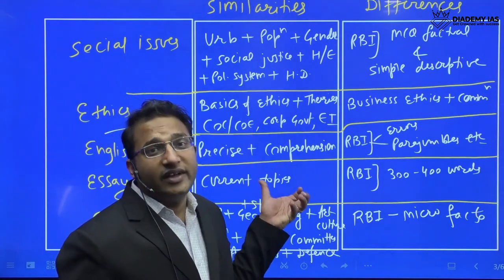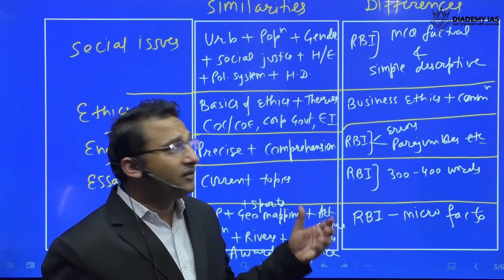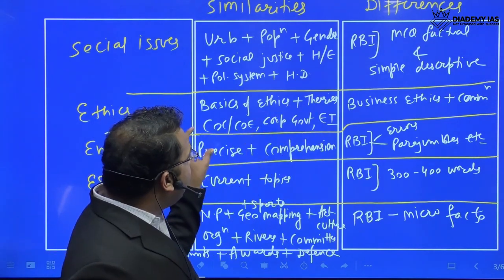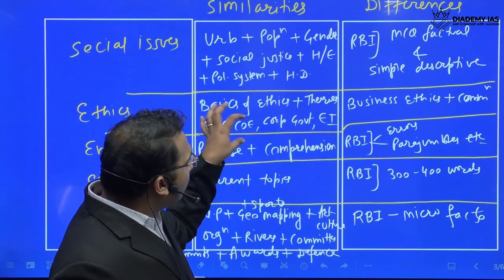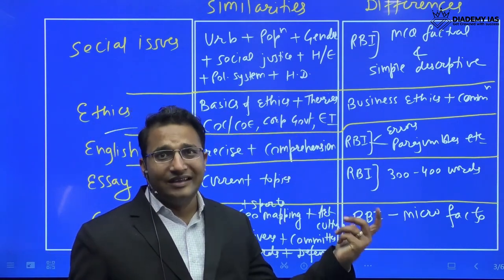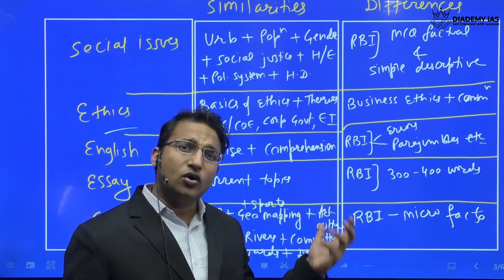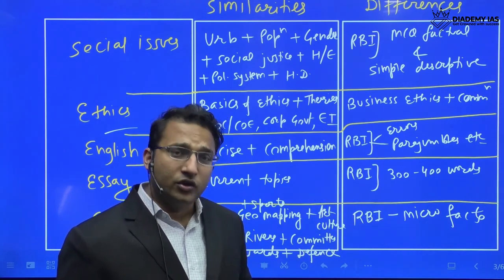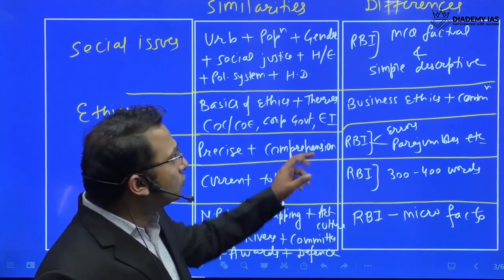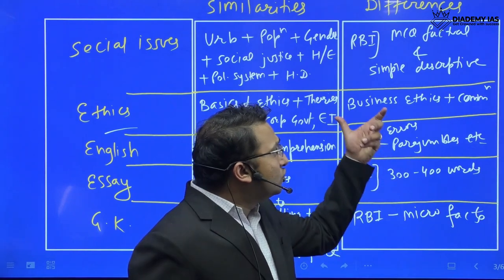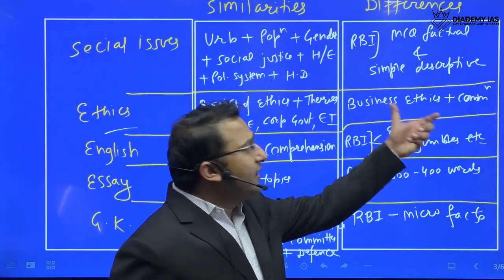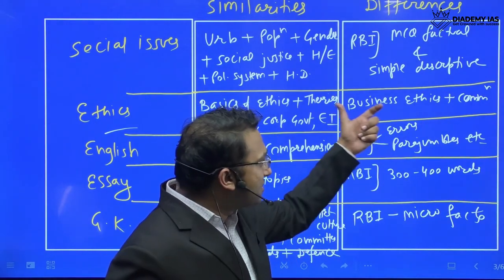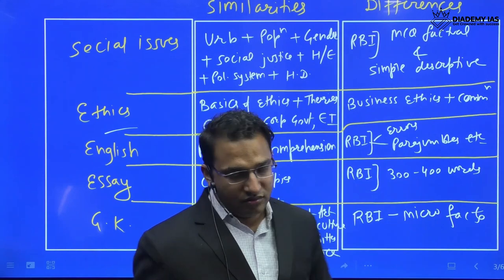For ethics, the common areas include the basics of ethics, its meaning, various theories of ethics, code of ethics, code of conduct, corporate governance, and emotional intelligence — all already part of GS Paper 4 of UPSC. The two additional areas that RBI focuses on are business ethics and communication.